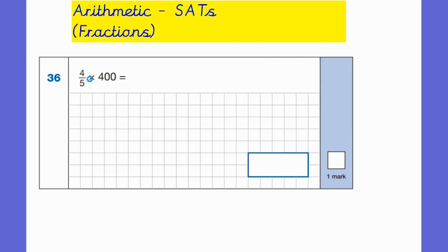Okay, another fractions of amounts question. But this time they've given a multiplication sign in the place of 'of'. So again we just need to do 400 divided by 5. I can use a written method for that if I want to. But I know that's 80. And then I'm going to do 80 multiplied by 4. Now I know that 8 times 4 is 32. So I know that 80 times 4 must be 320. And again I always remember to put my answer in the box.